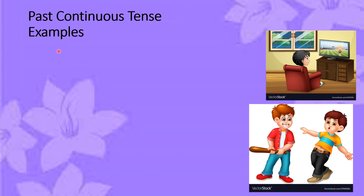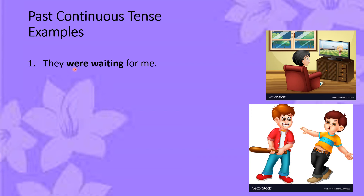Let's make it simpler with examples. Number one: 'They were waiting for me.' You can see that 'they' is the subject, 'were' is the auxiliary verb, 'waiting' is the fourth form of the verb, and 'for me' is the extension. Notice that 'were' and 'waiting' are in bold, because the auxiliary verb shows the tense — it is showing that this is the past continuous tense, meaning the action was taking place in the past.